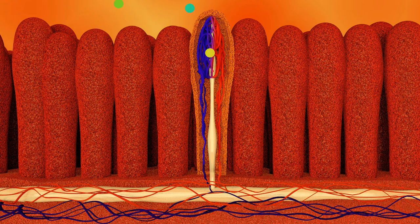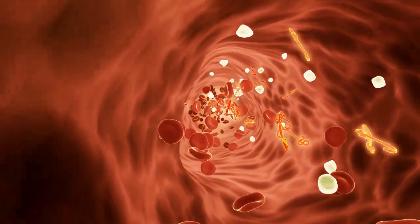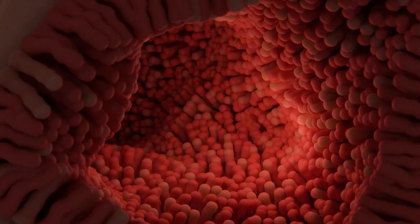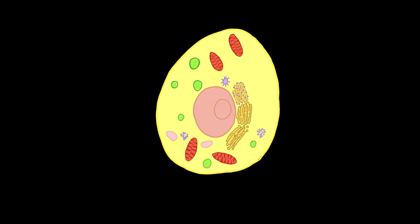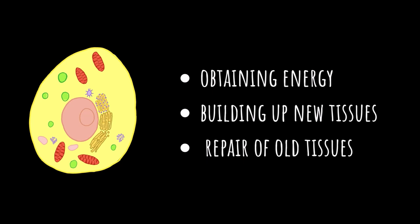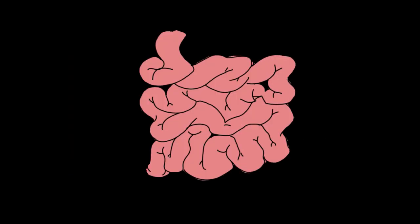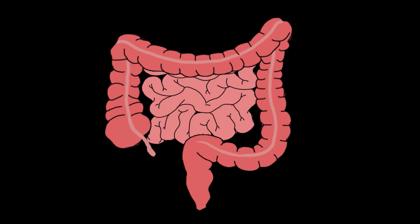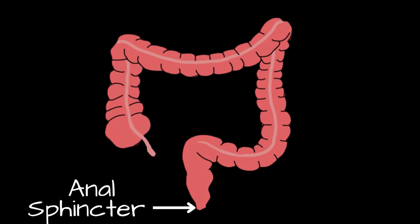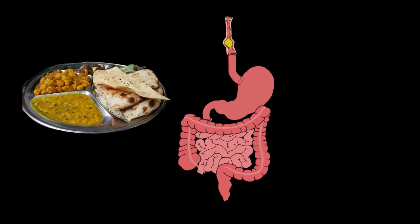The digested nutrients — glucose, fatty acids, and glycerol — are absorbed into the bloodstream and circulated throughout the entire body. The small intestine has many villi to maximize food absorption and ensure nutrients reach the cells. Once cells receive these nutrients, they can produce energy, build new tissues, and repair old ones. Undigested material that cannot be absorbed passes into the large intestine, where water is absorbed. The remaining waste is expelled from the body through the anus, a process regulated by the anal sphincter muscles.